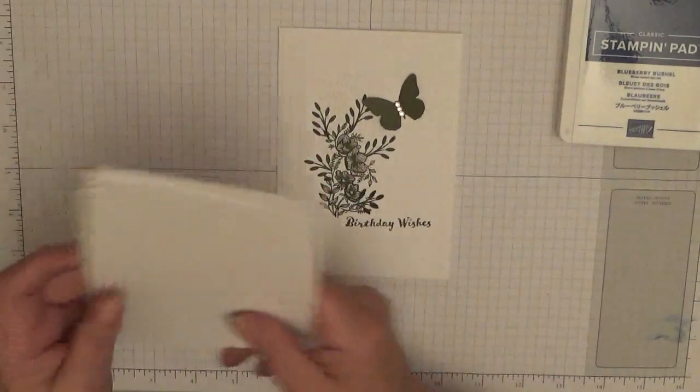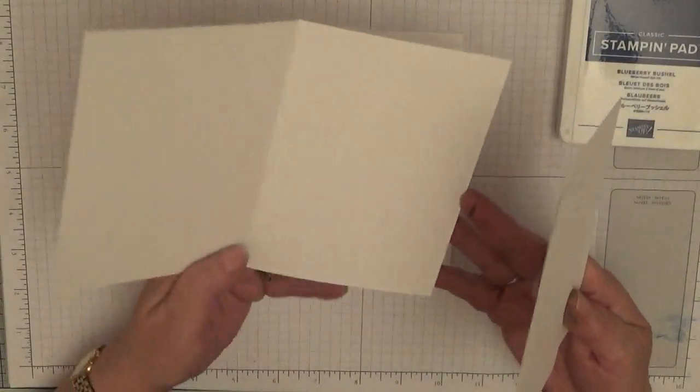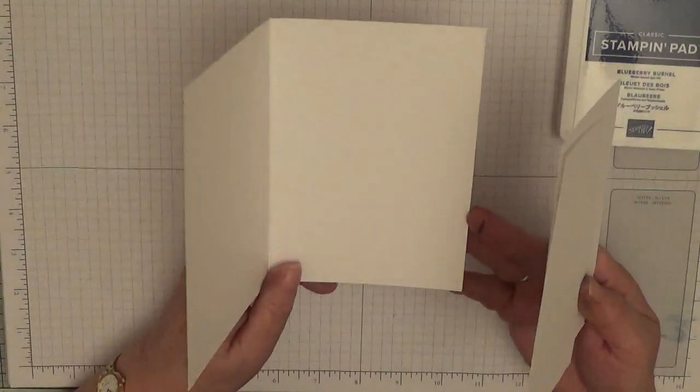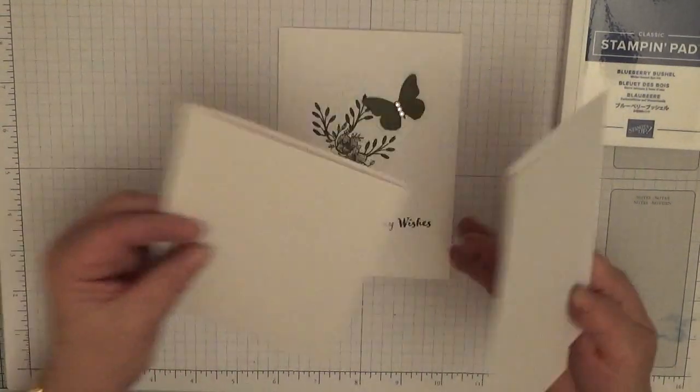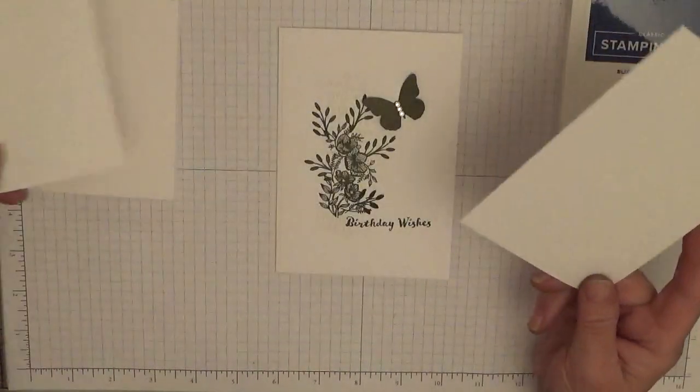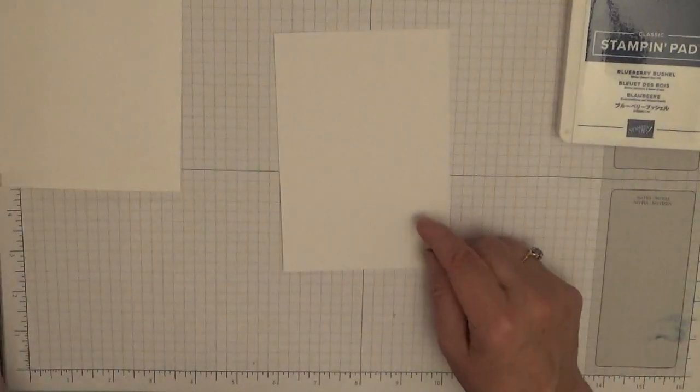So to get started you will need a card base of eight and a quarter by five and seven-eighths, scored and folded at four and one-eighth, and two pieces of white cardstock at five and five-eighths by three and seven-eighths.